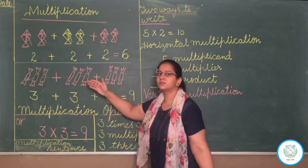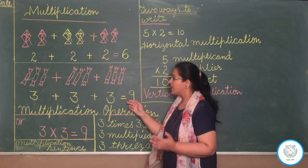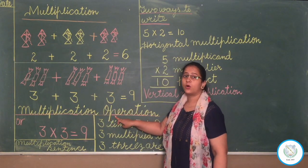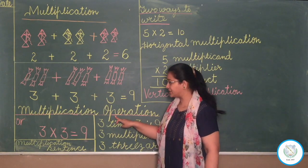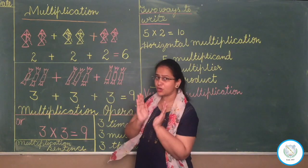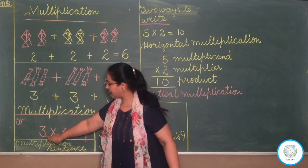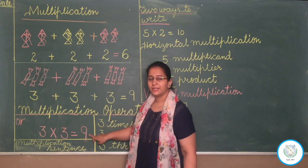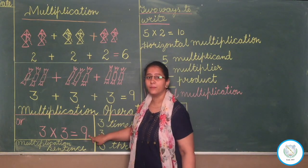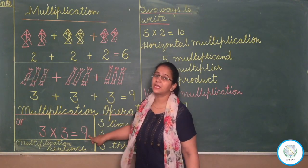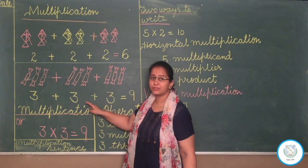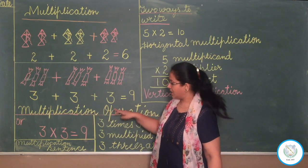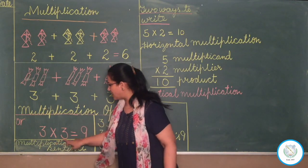This is a very lengthy process — three plus three plus three. So this is called a multiplication operation. We can write this in a short form: three into three is equal to nine. This is the short form, and we can say this is the repeated addition of multiplication, this is called a multiplication operation.